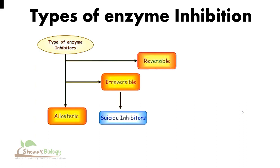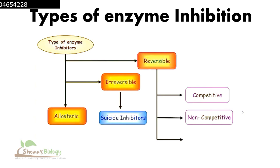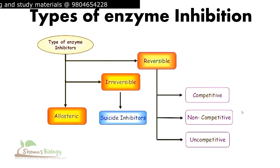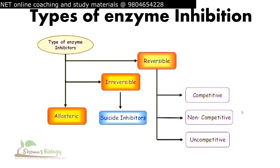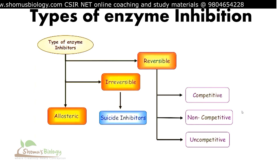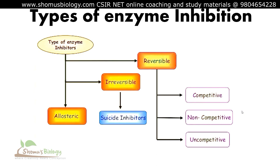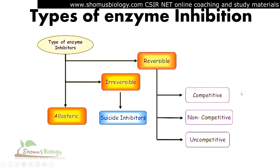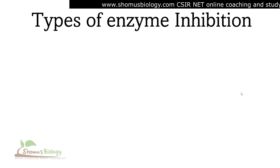Reversible inhibition is the most common and includes three types: competitive inhibition, non-competitive inhibition, and uncompetitive inhibition. Non-competitive inhibition is also known as mixed inhibition. In competitive inhibition, the substrate and inhibitor compete with each other to bind to the active site of the enzyme. In non-competitive and uncompetitive inhibition, there is no such competition — the inhibitor binds to a different site than the active site.